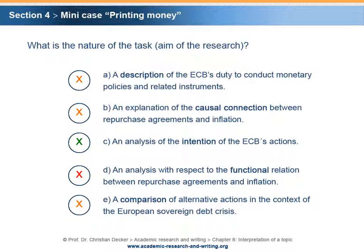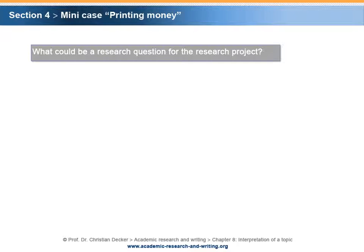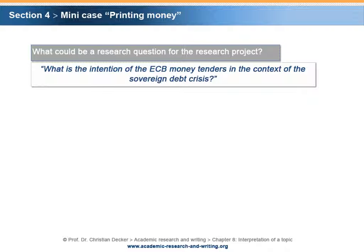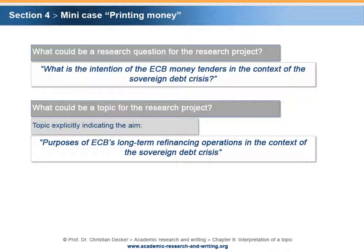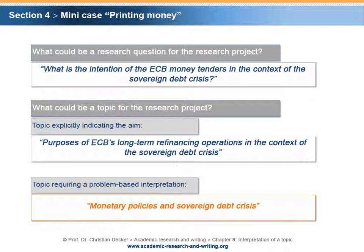The correct answer is C. The nature of the task is to analyze the intention of the ECB's action. In this problem setting, also options A, B and E leave room for alternative or additional aims. The question to be asked could be: What is the intention of the ECB's money tenders in the context of the sovereign debt crisis? An option explicitly indicating the aim would be: Purposes of ECB's long-term refinancing operations in the context of the sovereign debt crisis. An option requiring an interpretation would be: Monetary policies and sovereign debt crisis.